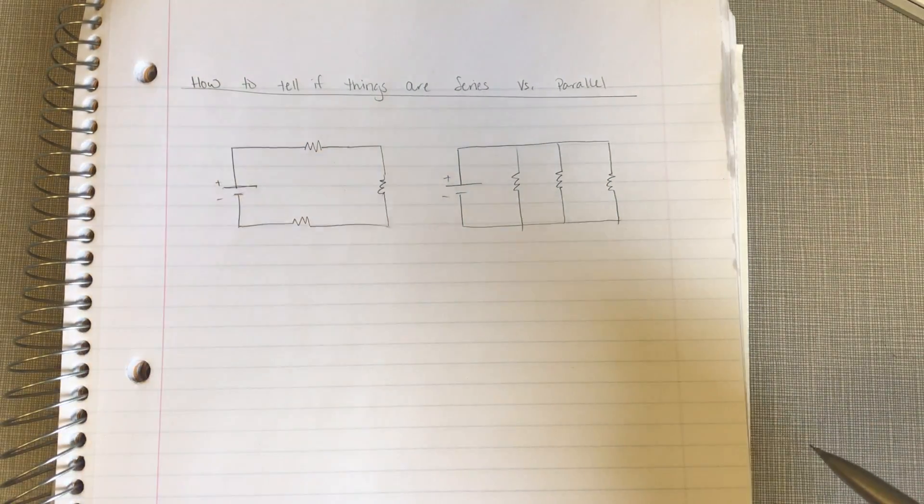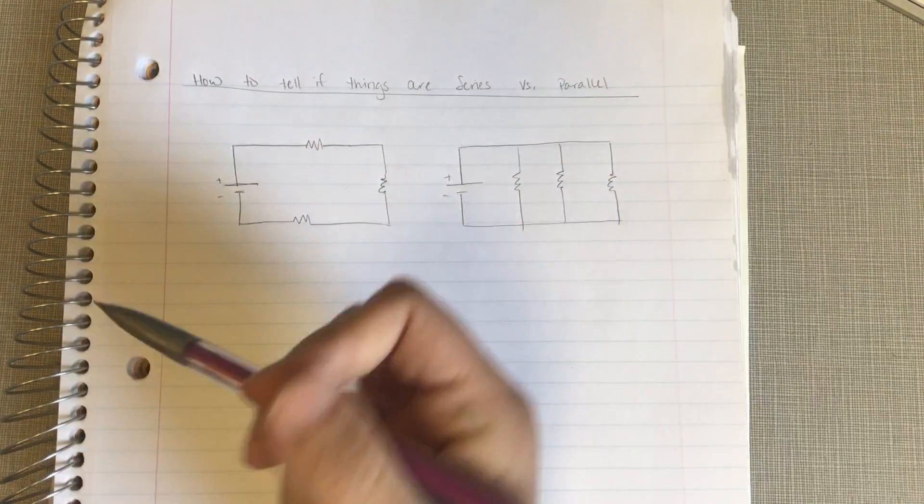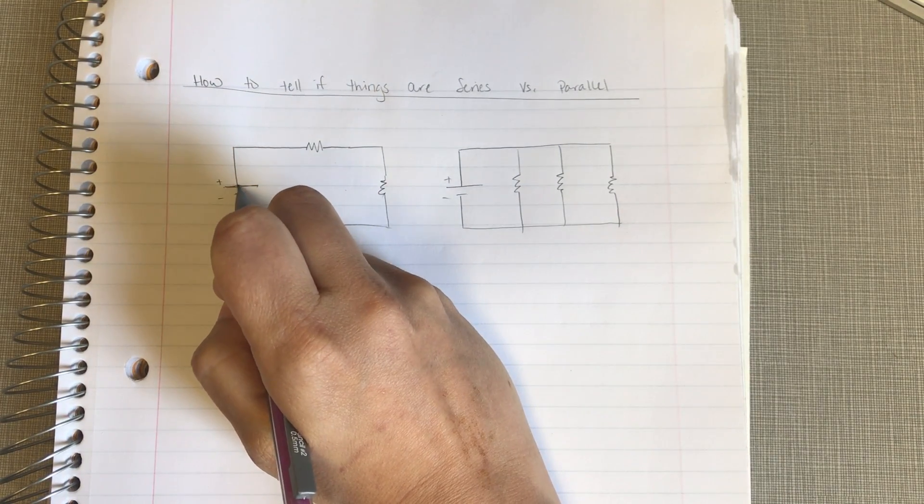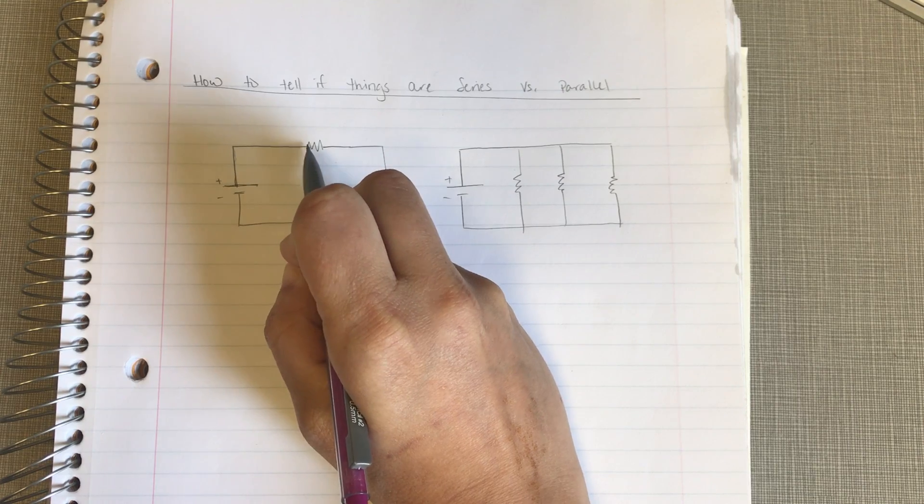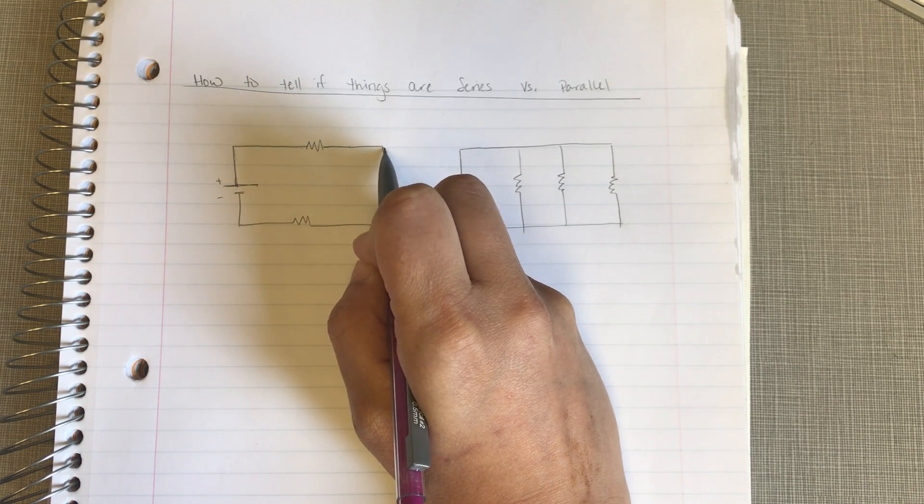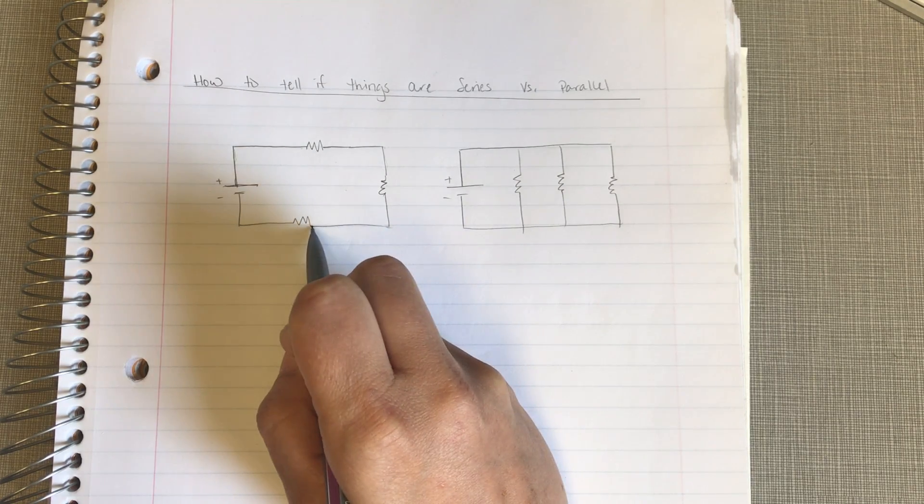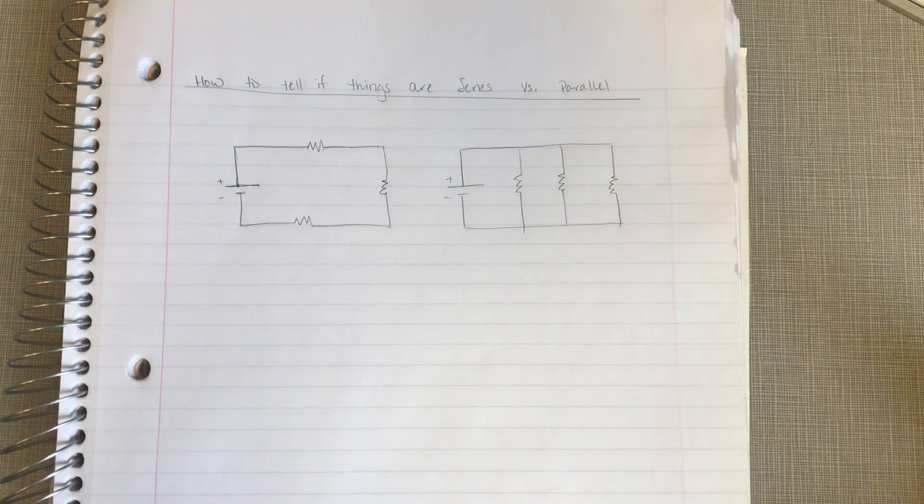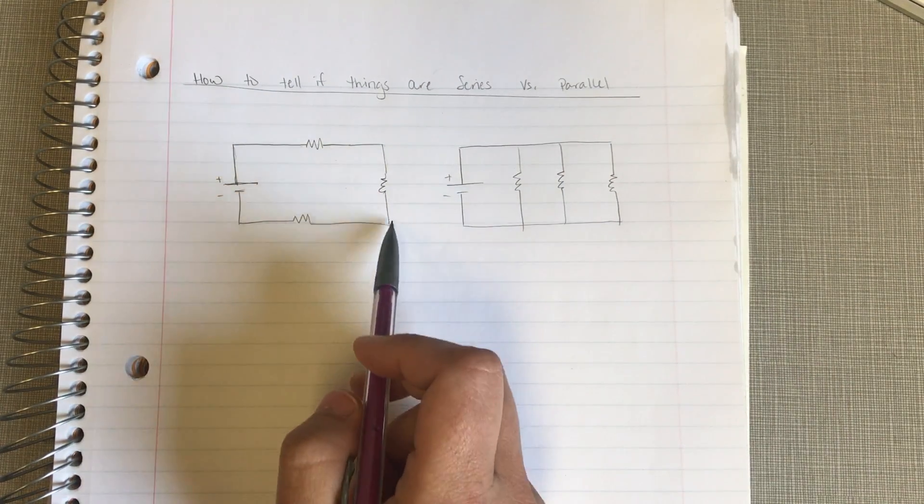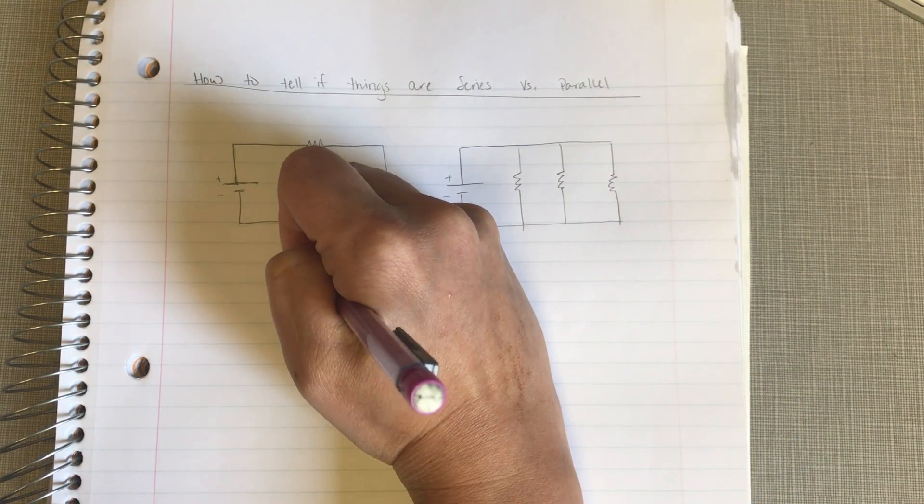If things are in series, there is only one way for the current to go. So, my conventional current comes out of my positive terminal and travels around. It has to go through this one, it has to go through this one because there's literally nowhere else for it to go, and it has to go through this one. So, these three dudes are in series. Current has no choice but to go through those. So, series.